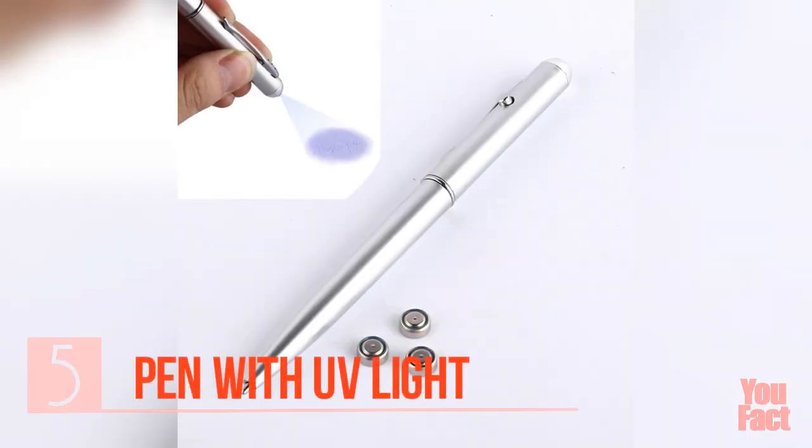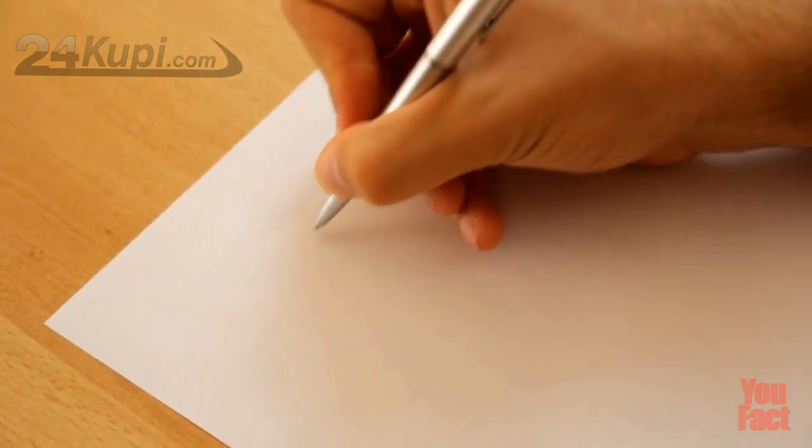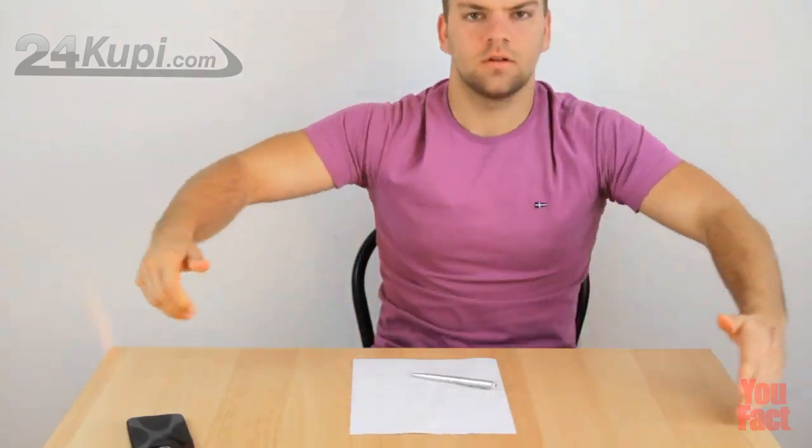Also you can really come in handy such a thing as a pen with invisible ink. For example, you can write down any formula on a sheet of paper. A sheet of paper will remain absolutely clean in this case.